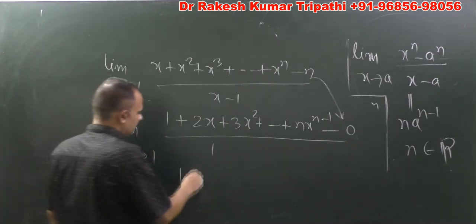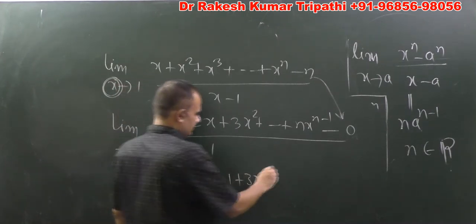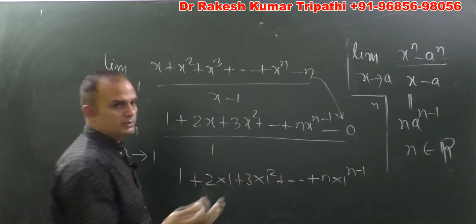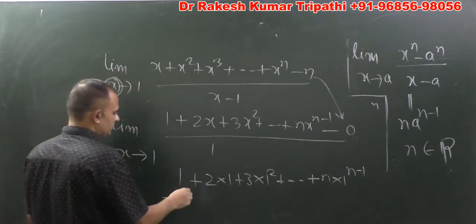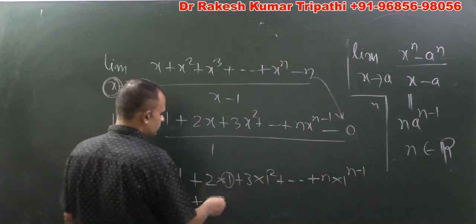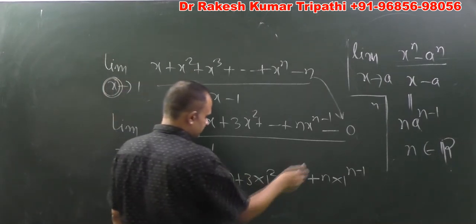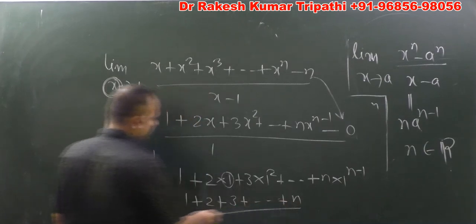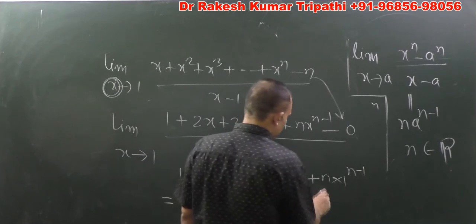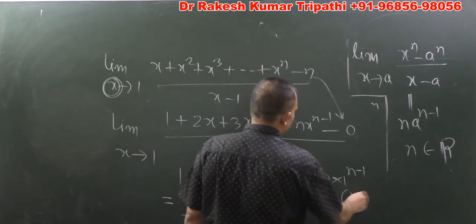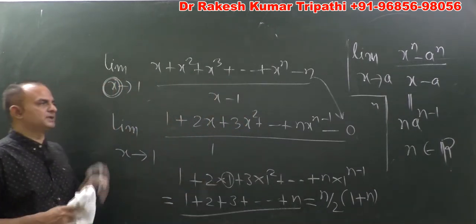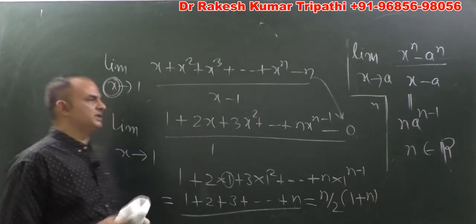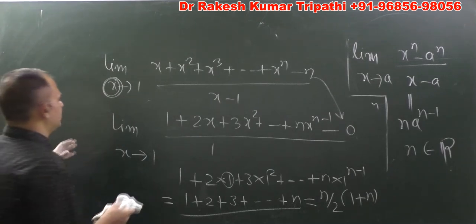Differentiating the numerator: the derivative of x is 1, of x² is 2x, of x³ is 3x², and of xⁿ is nxⁿ⁻¹, while the derivative of the constant n is 0. The denominator's derivative is 1. Now substituting x = 1: we get 1 + 2(1) + 3(1)² + ... + n(1)^(n-1) = 1 + 2 + 3 + ... + n, which is an AP with sum n(n+1)/2. This is the miracle of L'Hôpital's rule, which applies for objective but not descriptive examinations.